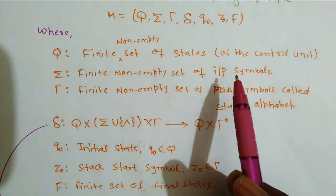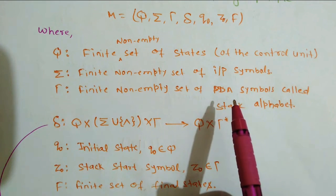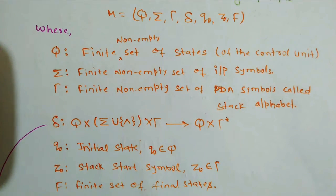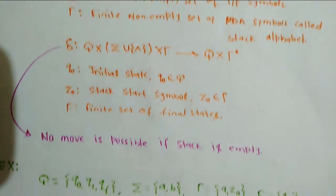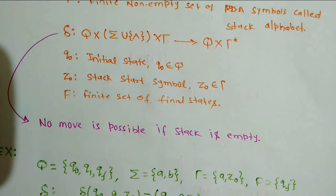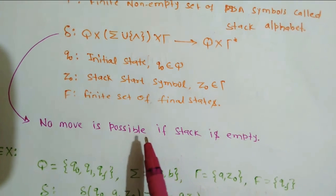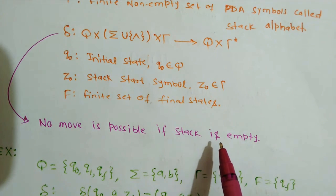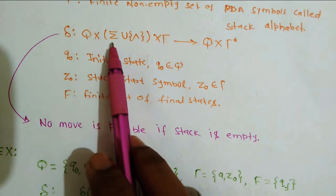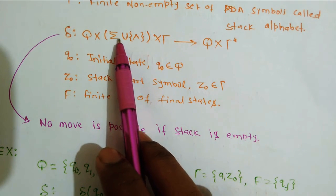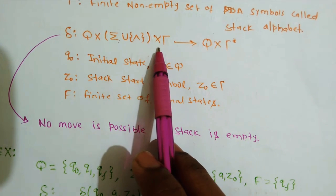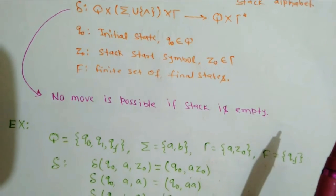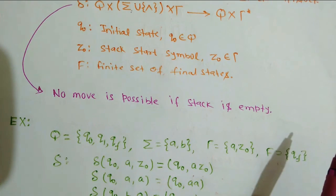The final tuple is the set of final states, a finite set of final states. One important point: no move is possible if the stack is empty. If the stack is empty, there is no possible movement.